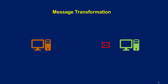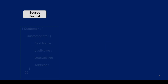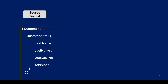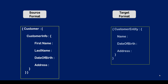Message transformation is an important aspect when it comes to integrations, especially when the integration is between heterogeneous systems. We can't expect the source and destination systems to accept messages in the same format. So this would need an integration layer like WSO2's Enterprise Integrator to perform the transformation of messages being exchanged between the source and target. In today's video, I'm going to explain one of the message transformation capabilities offered by WSO2, and it's called Data Mapper.